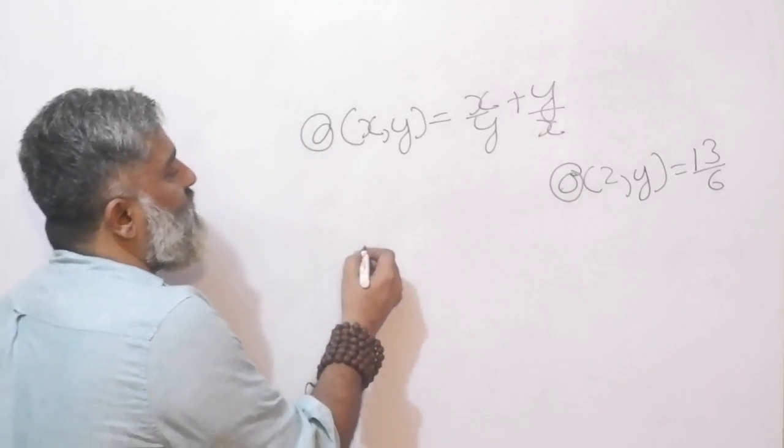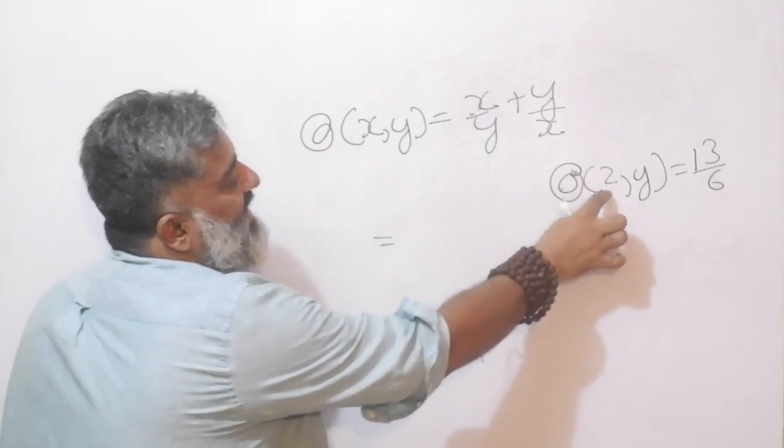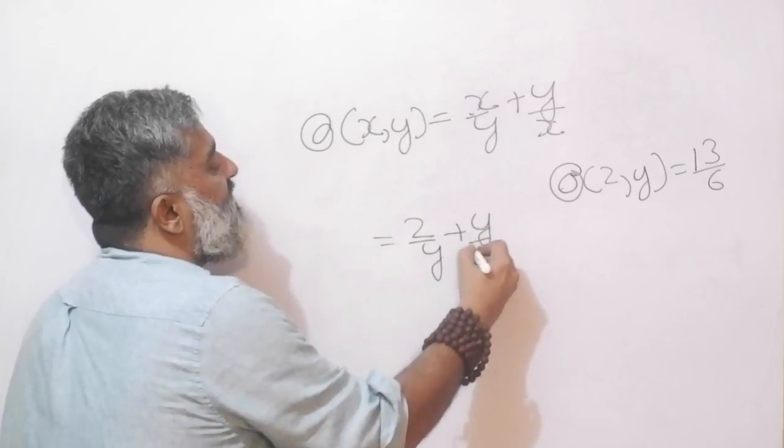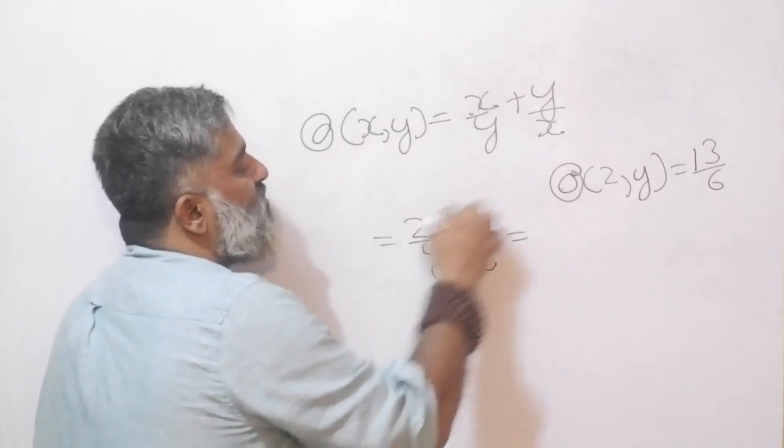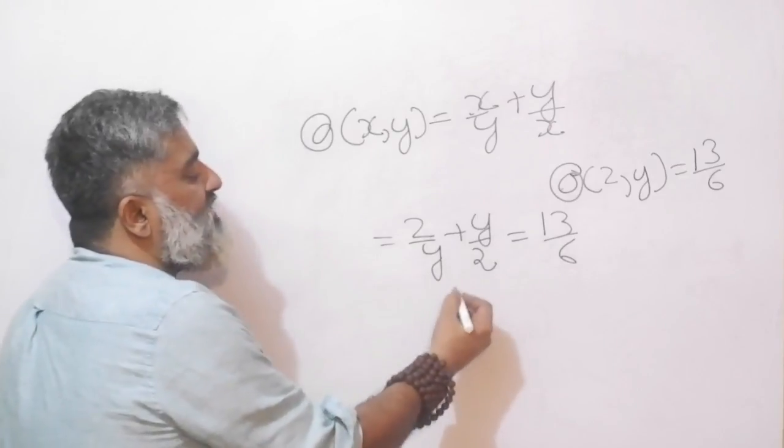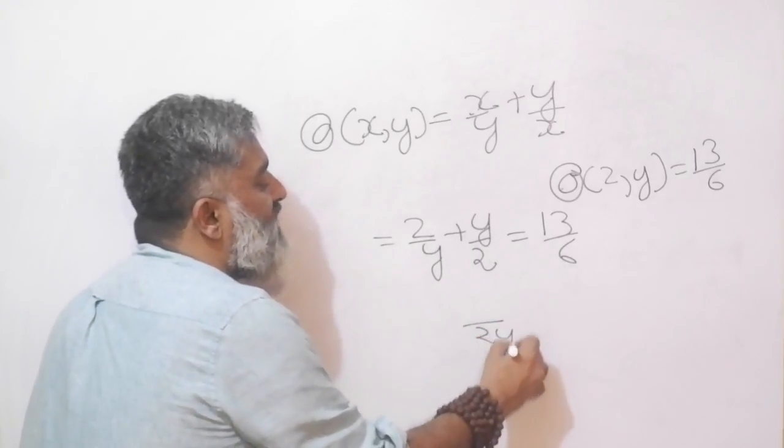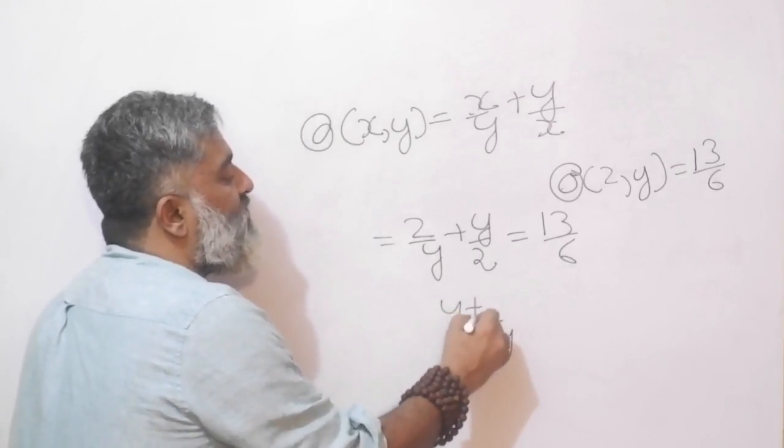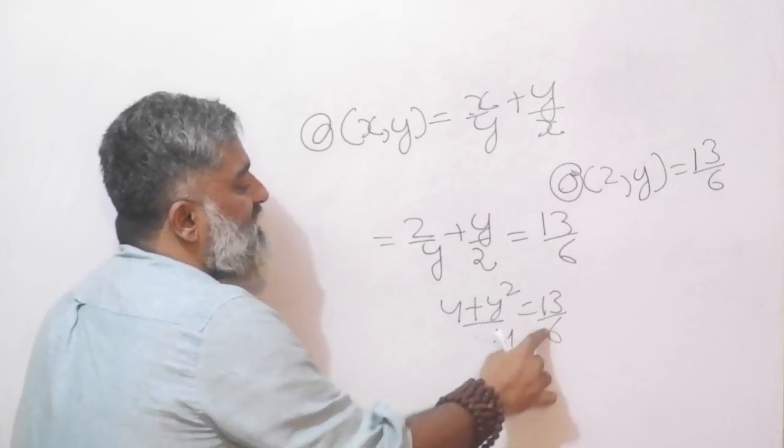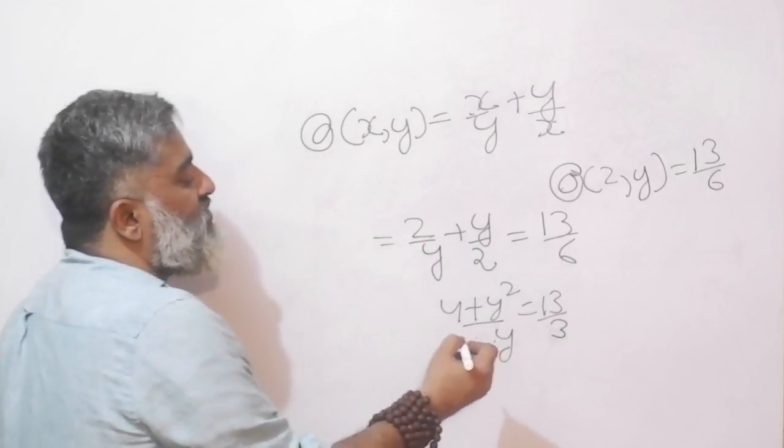Play the same game as before. Wherever there is x put 2. So 2/y plus y/2 is equal to, and you know the final value is 13/6. Solve this equation now. I will get 2y in the denominator. I will get 4 plus y square equals 13/6. I can cancel out and make it so. Cross multiply, I will get 13y, and multiply the 3 on this side. I will get 12.